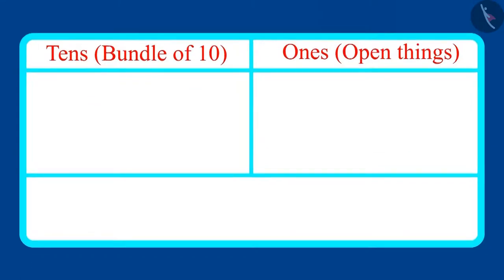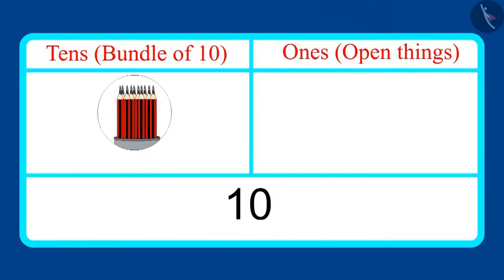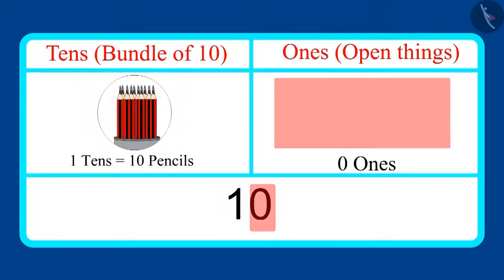Come on children, let us now write these numbers in the form of tens and ones. First of all, let's look at the number of pencils, which is 10. This means it has one tens and zero ones.